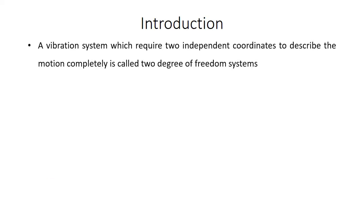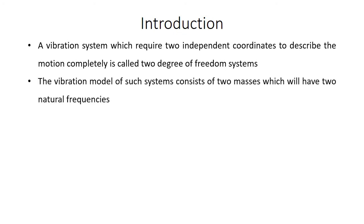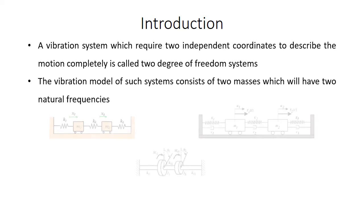A 2 degree of freedom system is a system which requires two independent coordinates to describe the motion completely. The vibration model of such a 2 degree of freedom system consists of two masses, which will have two natural frequencies.